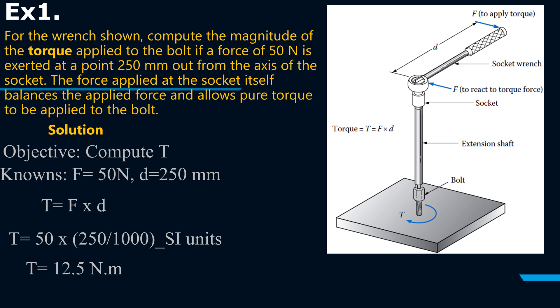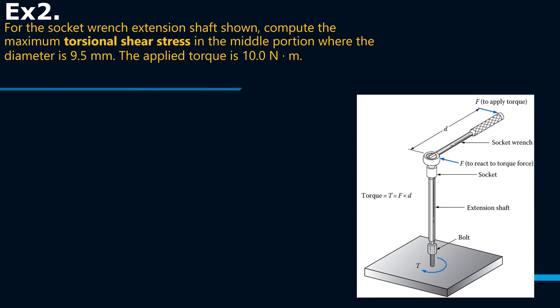That's quite straightforward. The second example I think we'll go a little bit more into details. For the second, again the same figure, for the socket wrench extension shaft shown compute the maximum torsional shear stress in the middle portion where the diameter is 9.5 millimeters.